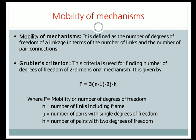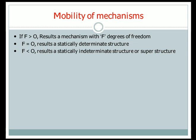This is how we find the degrees of freedom of a mechanism. If the value of f is greater than zero, then it results in some f degrees of freedom. For example, if f equals one or two, then the mechanism is said to have that many degrees of freedom — one degree of freedom or two degrees of freedom respectively.